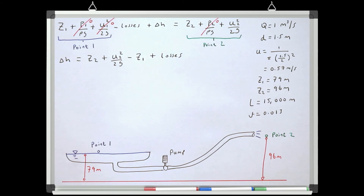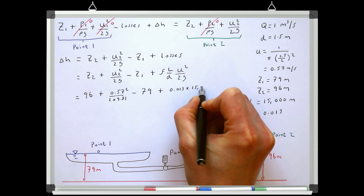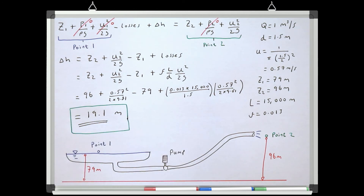As this is a relatively large system, local losses are insignificant compared to continuous losses, so we neglect local losses and account only for continuous losses due to friction, viscosity and turbulence. At this point we know all terms: elevations, velocity, friction factor, pipe length and pipe diameter. Plugging these numbers in gives a final answer of 19.1 metres. So the pump needs to add 19.1 metres of total pressure head — enough to lift water to the required outlet elevation and overcome all losses in the system.